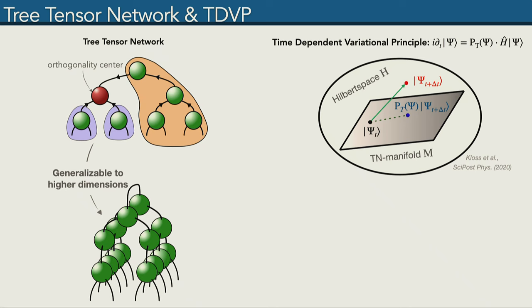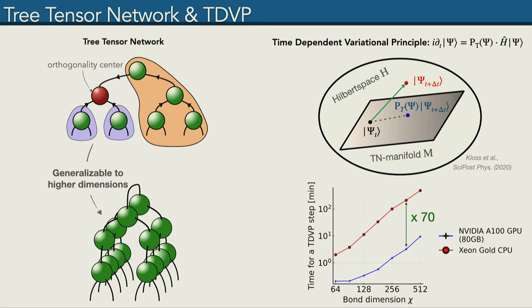One realizes that the usual concepts you may be familiar with from Matrix Product States, like environments and orthogonality centers, also generalize to Tree Tensor Networks. In this case, we have bottom environments and top environments, as well as orthogonality centers. A further neat thing is that the most expensive operations in this scheme are matrix-matrix multiplication and singular value decompositions, so we profit a lot from using a GPU over a CPU. You can see for one TDVP time step, we get around a factor of 17 speedup.